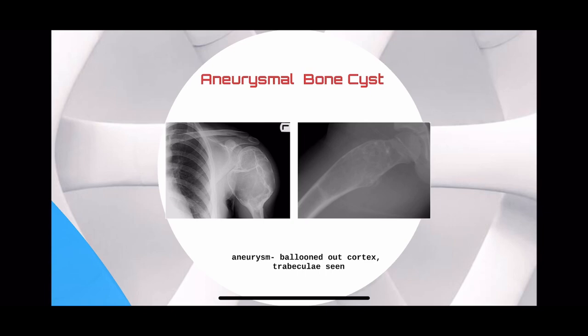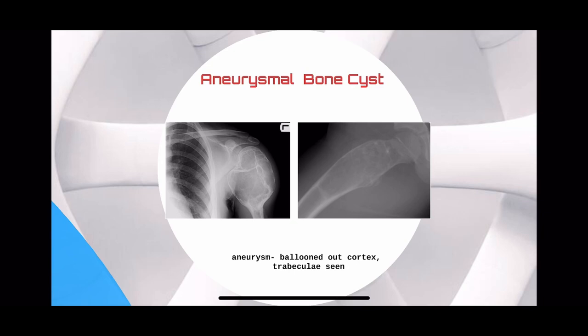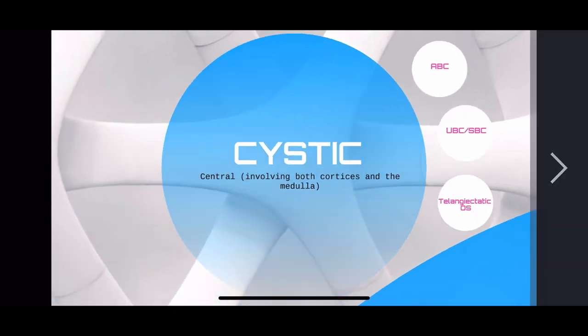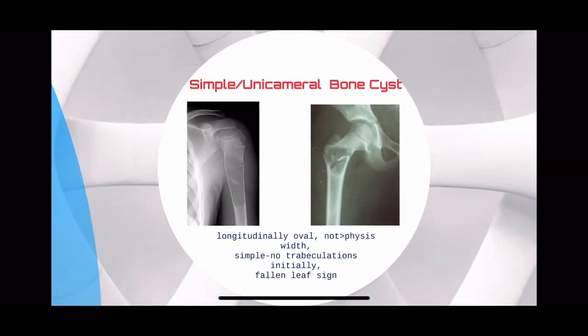There will be trabeculations like you see in a giant cell tumor. However, GCT is seen in the epiphysis while these are seen in the metaphysis or diaphysis. On the other hand, a simple bone cyst or unicameral bone cyst — the cyst is elongated and is invariably less thick in diameter than the native bone. Mostly there are no trabeculations except if there is a fracture.